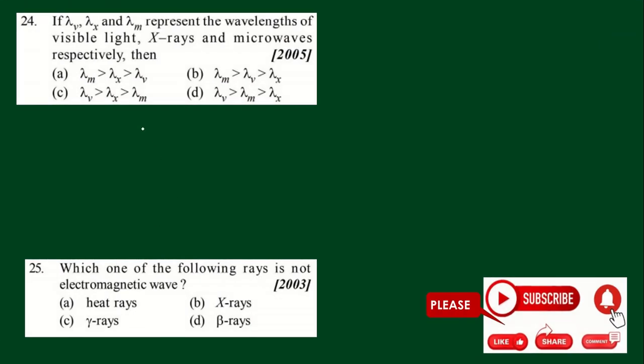We can move with the next one, number 24. If lambda v, lambda x and lambda m represent the wavelength of visible light, x-rays and microwaves, then analyzing the spectrum: the wavelength is largest for microwaves, then visible, then x-rays. That means lambda of microwaves is greater compared to visible compared to x-rays. We can choose the second option as the answer.